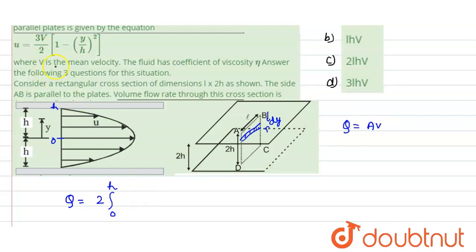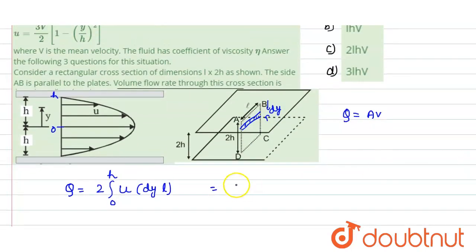So what is the velocity? First of all we write the velocity, it is given as u. And what is the area? Area would be this dy into l, so we say that it would be dy multiplied by l. This is the area. Now we can put the value of u.